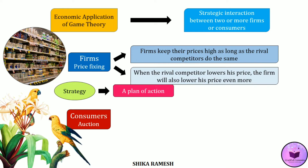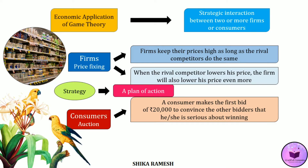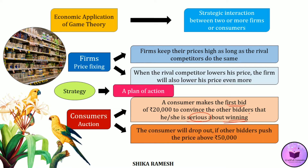Similarly, in the case of consumers bidding for a piece of art in an auction, a consumer who is serious about winning will make the first bid so as to convince others that he is serious, and he will be thinking about dropping out if the other bidders push the price above a limit set in his mind. For instance, if the consumer is ready to pay up to 50,000 rupees and initially bids 20,000 to show he is serious, but if other bidders push the price above 50,000 rupees, then that consumer will drop out from the auction.